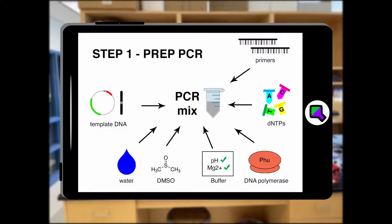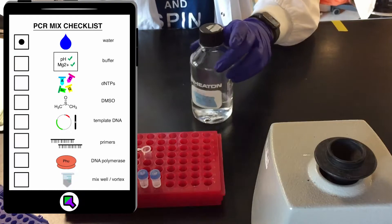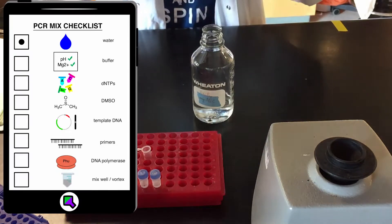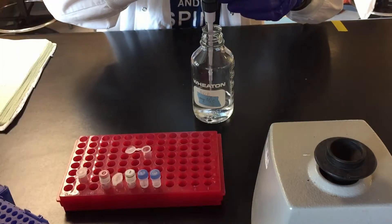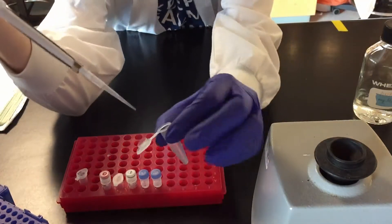Step one is preparing the PCR mix. First we add the water because it's the largest volume and it's easier to add other reagents to it. It also provides a space for the reaction to occur.